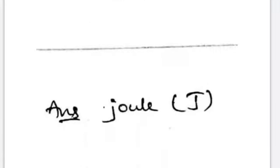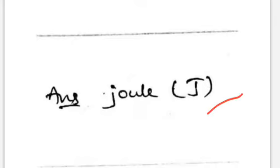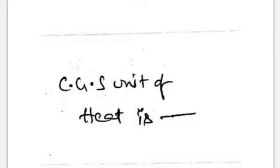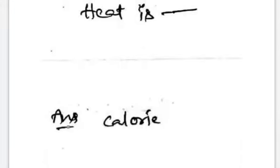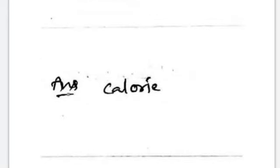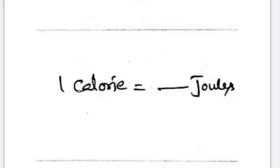The SI unit of heat is Joule. Joule is the SI unit of heat. The CGS unit of heat is Calorie. So Calorie is the CGS unit of heat and Joule is the SI unit of heat.